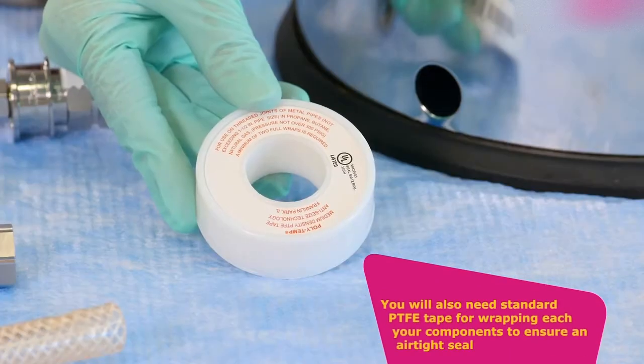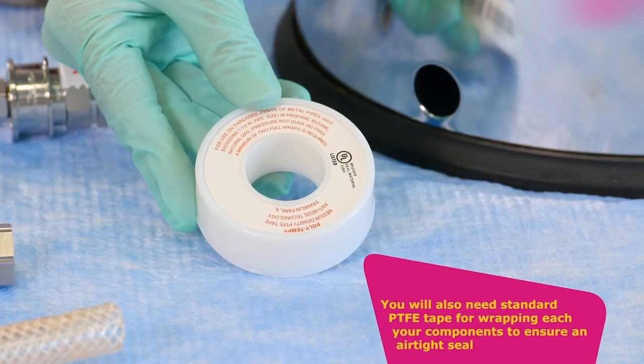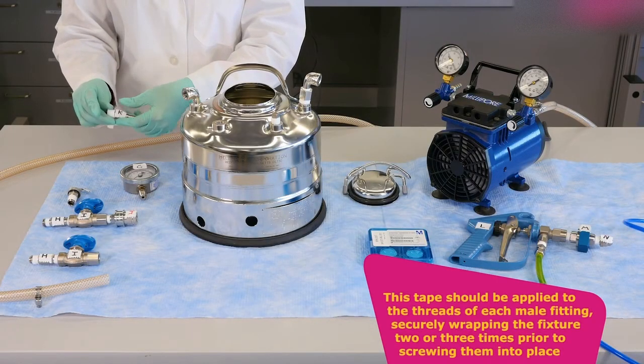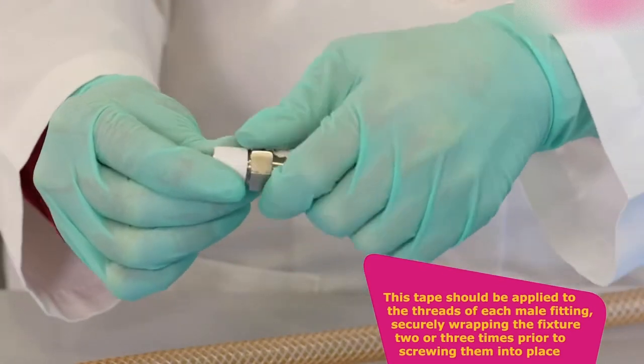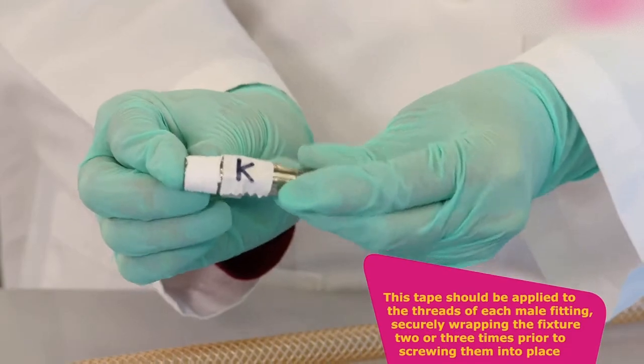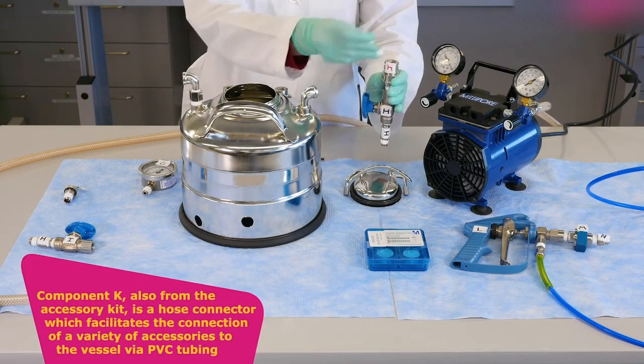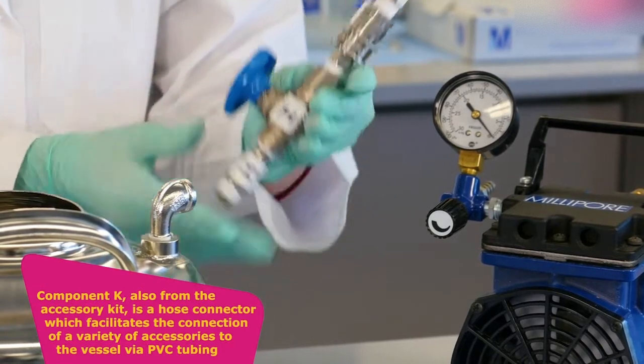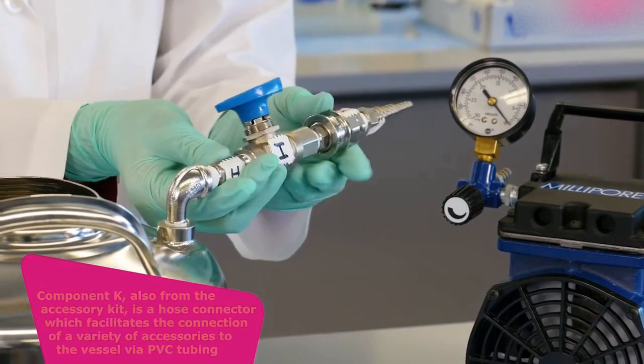You will also need standard PTFE tape for wrapping each of your components to ensure an airtight seal. This tape should be applied to the threads of each male fitting, securely wrapping the fixture two or three times prior to screwing them into place. Component K, also from the accessory kit, is a hose connector, which facilitates the connection of a variety of accessories to the vessel via PVC tubing.